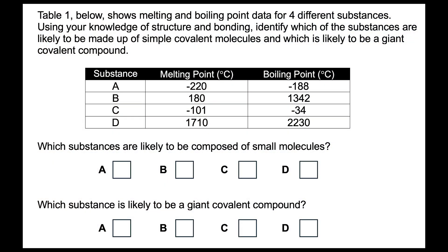Another type of question might be a simple classification of substances into a structure type. Here we can see data on four substances and we need to decide which ones are likely to be made up of small, neutral molecules — all we have to do is identify which ones have the low boiling points. Hopefully you identified samples A and C. Of the two remaining, the one with the highest melting point — sample D — is likely to be a giant covalent structure. There are more of these questions on the free worksheet available on the Patreon page, complete with an answer sheet.